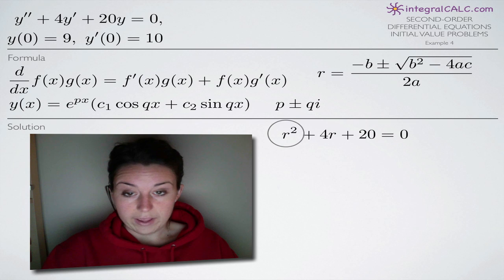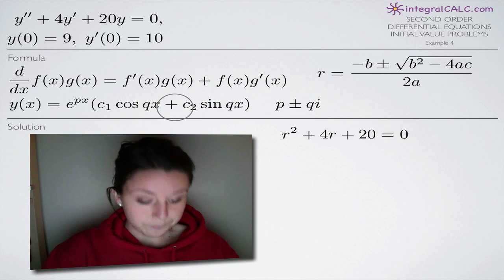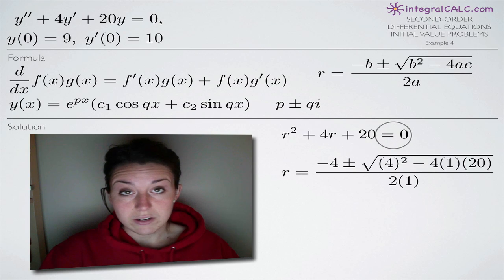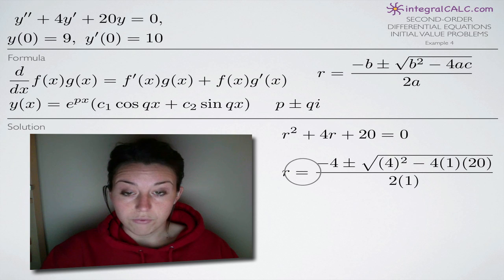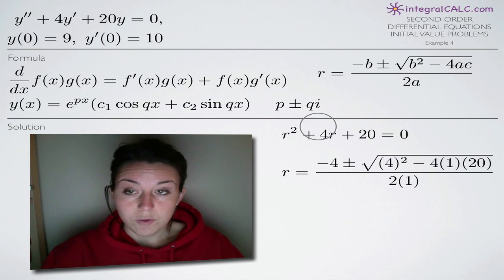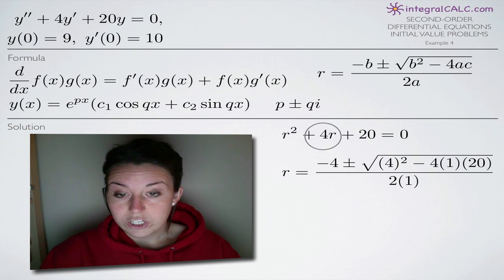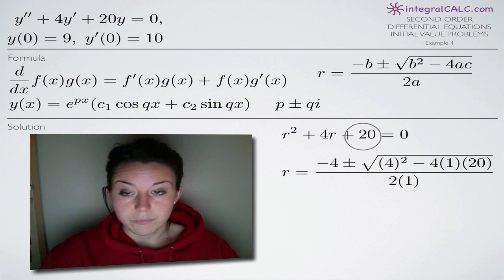That's how we replace y's with r's, and the reason we do that is because we're going to use this equation to solve for r, which will give us the roots or solutions to our equation that we'll plug into this formula. We'll normally try to factor this equation; in this case we can't easily factor it, so we're going to need to use the quadratic formula to solve for r. Remember that a is the coefficient on your squared term — in our case 1, b is the coefficient on r, in our case 4, and c is the third term without a variable, in our case 20.